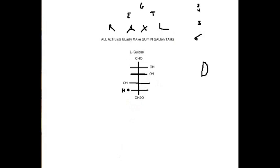It's really quick, simple way to remember it. Just remember, get raxl and all altruists gladly make gum in gallon tanks. And it really helps. Another just kind of quick thing. Some of the more simple ones also work for keto sugars.